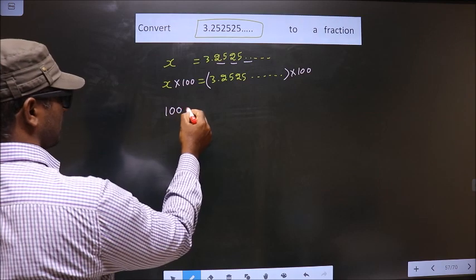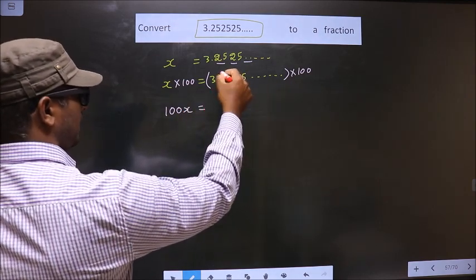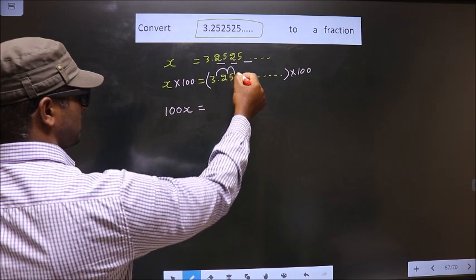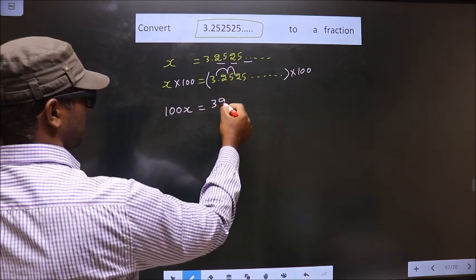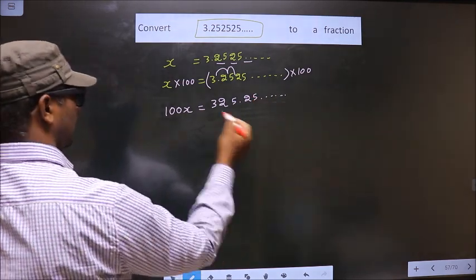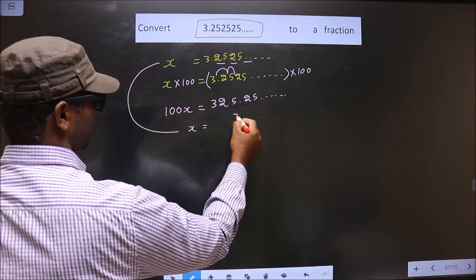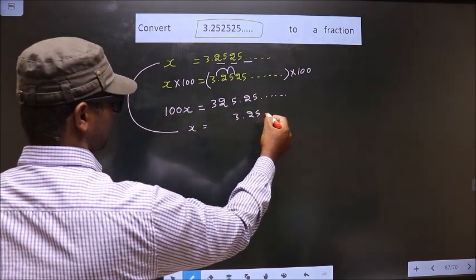Now here we get 100x equal to - when I multiply this with 100, the decimal will shift two places to the right, making it 325.25 and so on. Now I write x below this: 3.25 and so on.